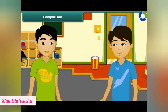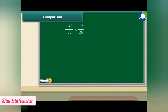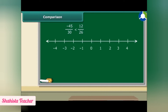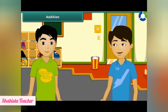To compare two rational numbers, we know that a negative number is always smaller than a positive number. We can compare rational numbers using a number line — the further right a number is, the greater it is. For example, 2/3 is greater than 1/3 because 2/3 lies to the right of 1/3. Similarly, -1/3 is greater than -2/3 because -1/3 comes to the right of -2/3.